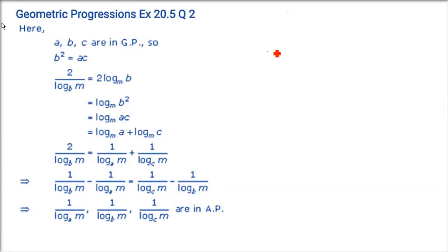If A, B, C are in GP, then we have to prove that 1/log_M A, 1/log_M B, and 1/log_M C are in AP. So first, A, B, C are in GP means B² = AC.